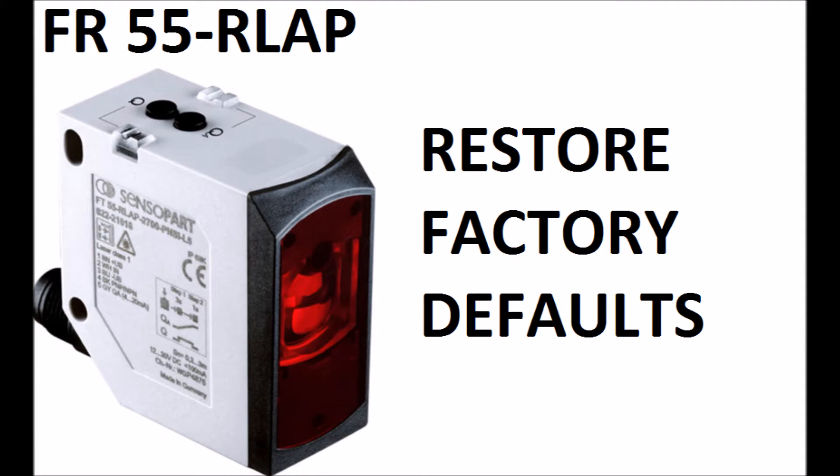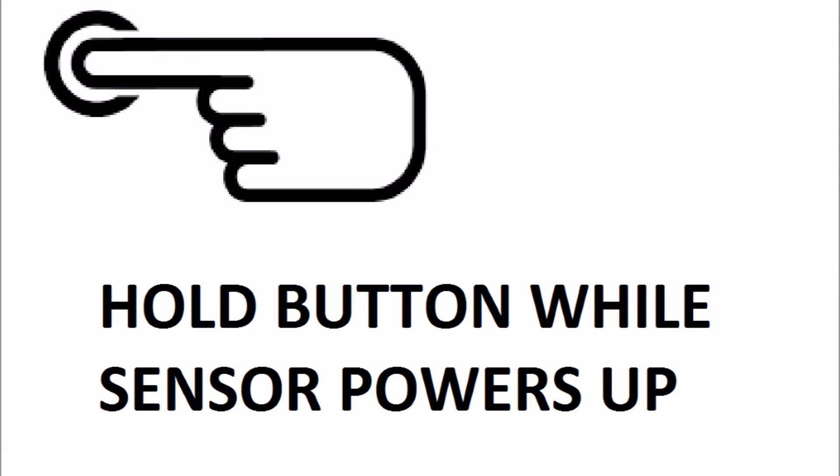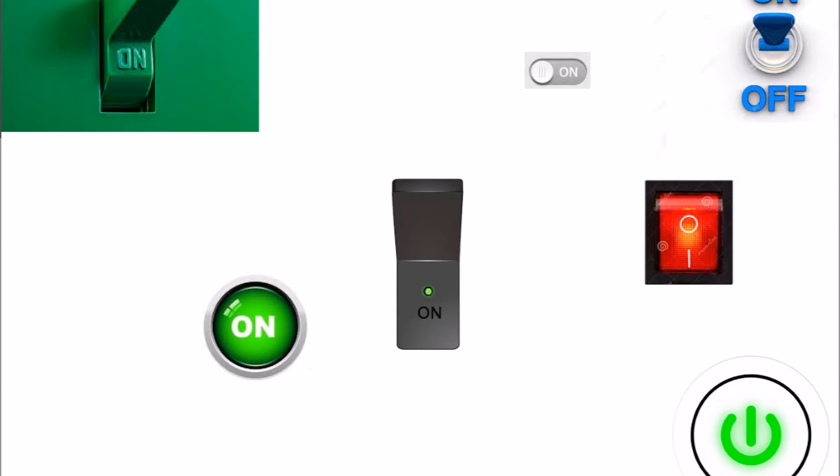To restore the sensor to factory defaults, it takes three steps. First, you turn off power to the sensor. Second, you press and hold any button, or you could energize the PLC output. Third, you power up the sensor while holding the button, and after a few seconds, the lights will flash rapidly, indicating it's been restored to factory defaults.